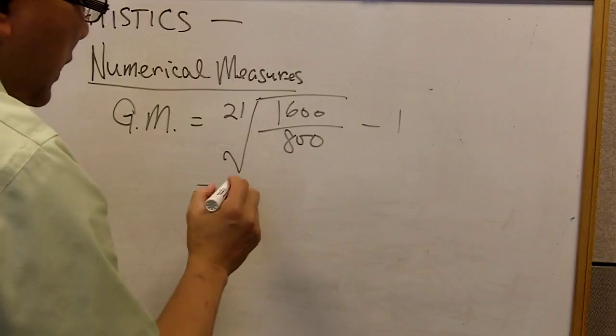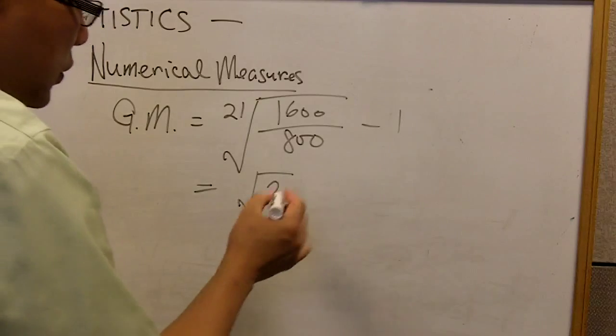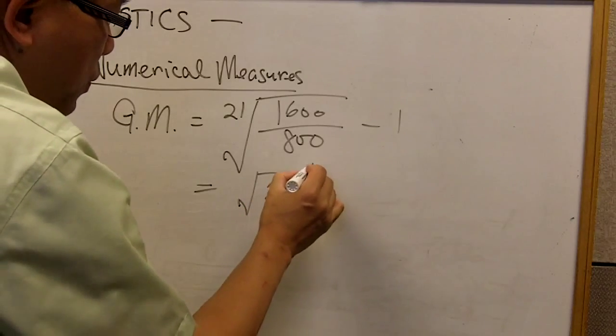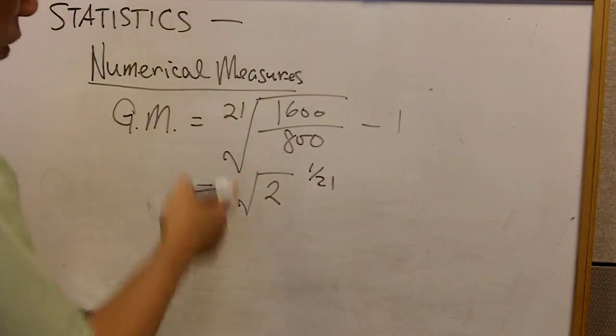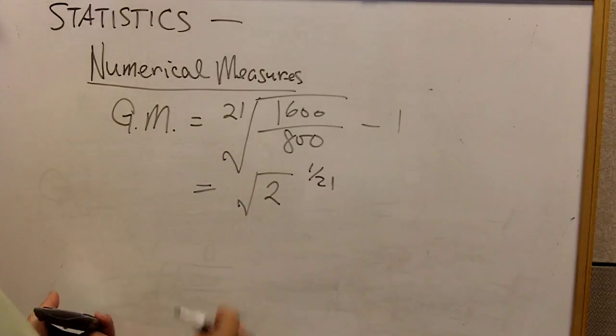It is the same as saying we are to take this value, which is 2, and raise it to power 1 over 21. So nth root is the same as raise to power 1 over 21, the reciprocal, minus 1.